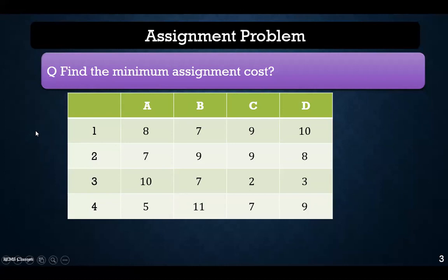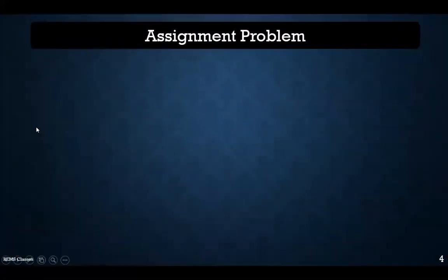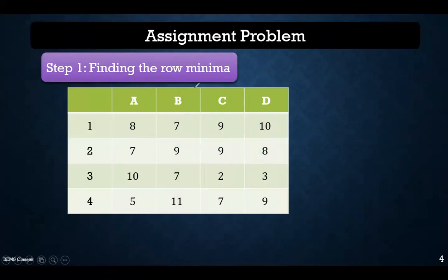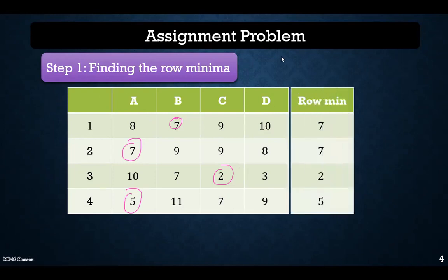In Hungarian method there are different steps. In the very first step, we find the row minima. For this particular problem, the row minima are: row one is 7, row two is 7, row three is 2, and row four is 5. So the different row minima values are 7, 7, 2, and 5.